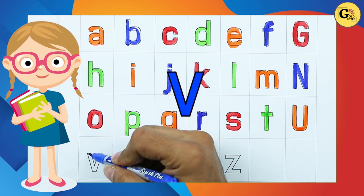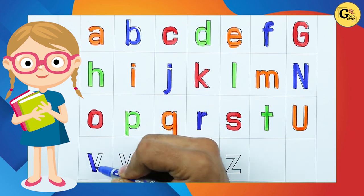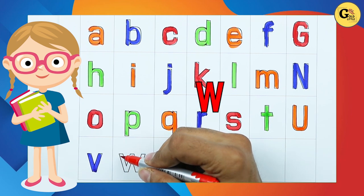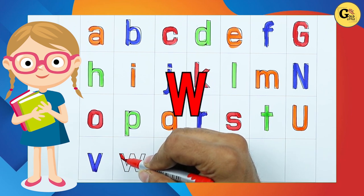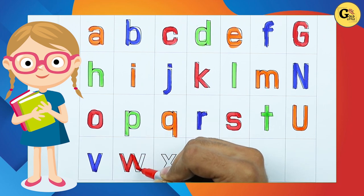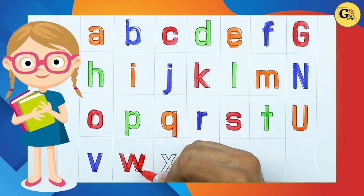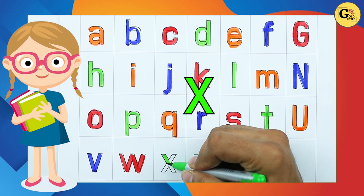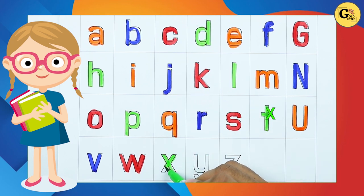V. V for Violin. It's V. W. Small W with red color. W for Watch. X. Small X with green color. X for Xylophone.